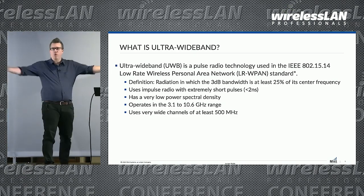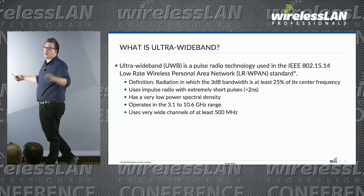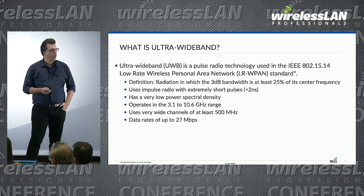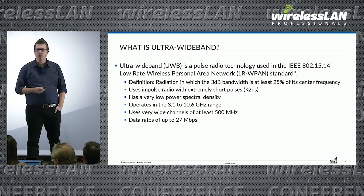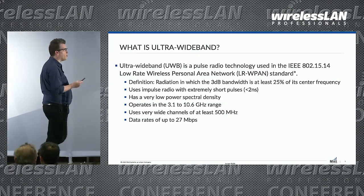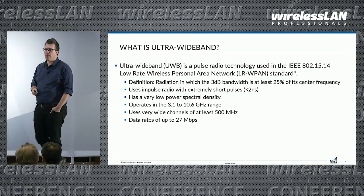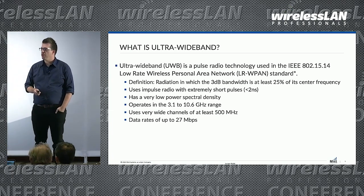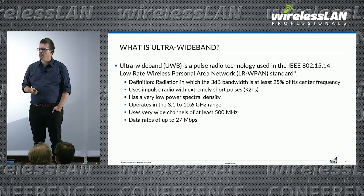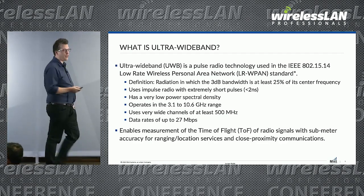Ultra-wideband means wide bandwidth — at least 500 megahertz channels, all the way up to 1,300 megahertz wide channels, which is pretty cool. You can actually have data rate use cases too. A lot of people's thoughts at the moment have been around location tracking, but it can be used for data exchange, data communications, and control communications — not just location services.